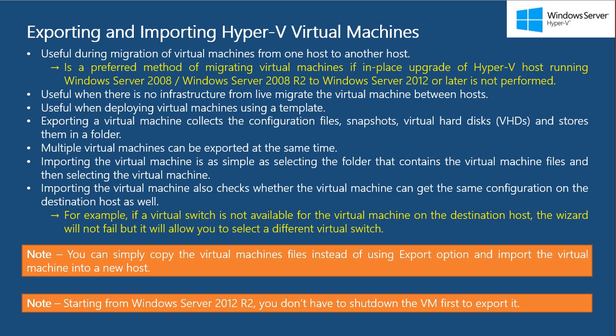If that is the case, you can export the virtual machines running on a Windows Server 2008 R2 Hyper-V host and import them on a Windows Server 2012 Hyper-V host. It is also useful if you want to deploy virtual machines using a template. You select a folder containing the files of a virtual machine and, using the Import Virtual Machine wizard, you can deploy a new virtual machine.